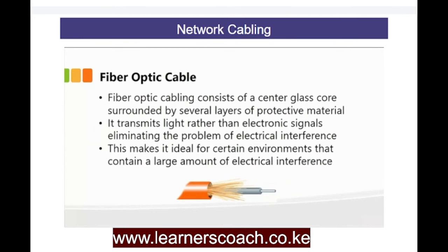The next type of cable is the fiber optic cable. This consists of a central glass core surrounded by several layers of protected material. It transmits light rather than electronic signals, eliminating the problem of electrical interference. With fiber optic cable we're not worried about attenuation problems, making it ideal for environments that contain a large amount of electrical interference, such as an electronic factory. Fiber optic cable would be the best possible solution in such cases.